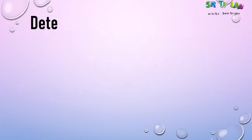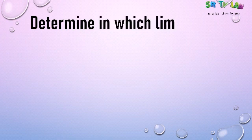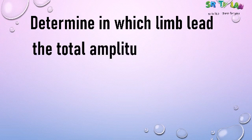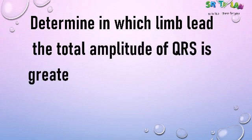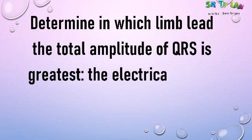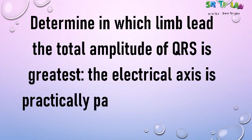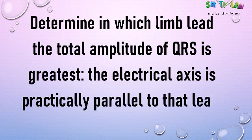Another step is to determine in which limb lead the total amplitude of QRS is the greatest. Remember, the first part was about the smallest amplitude; now it's the greatest. You should know that the electrical axis is practically parallel to the lead with the greatest QRS amplitude, and practically perpendicular to the lead where QRS amplitude is the smallest.